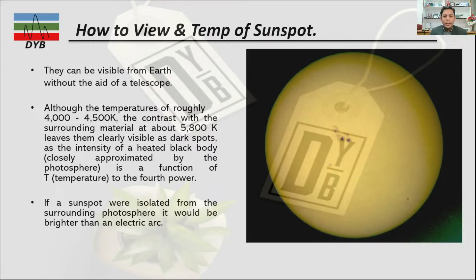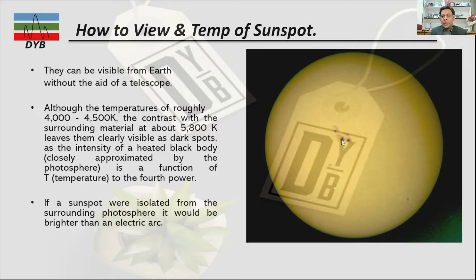Sunspots can be visible from the earth without the aid of telescopes, but this normally happens during a solar eclipse. Regarding temperature: the sun's surface is 5800 Kelvin, but the black spots — the sunspots — have a temperature of 4000 to 4500 Kelvin.